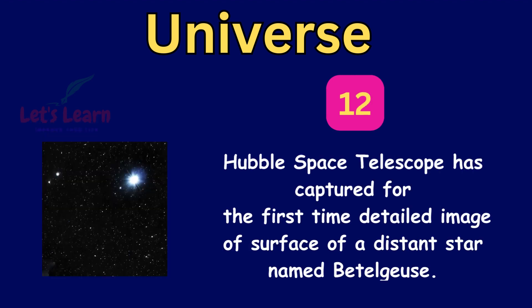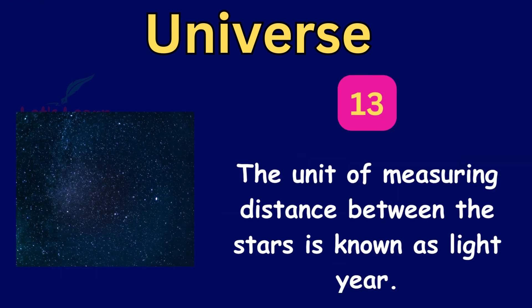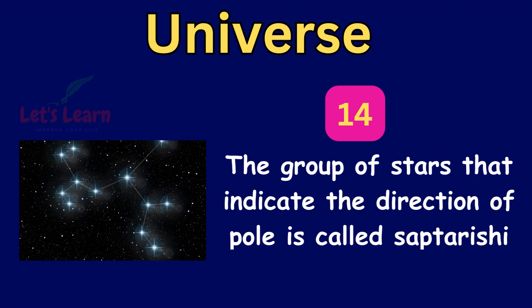Hubble Space Telescope has captured for the first time detailed image of surface of a distant star named Betelgeuse. The unit of measuring distance between the stars is known as light year. The group of stars that indicates the direction of pole is called Saptarishi.